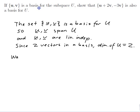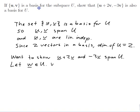I want to show that u plus 2v and minus 3v span U. And that means I want to show that everything in U is a combination of them. So let me pick a vector in U. Let w be in U. Want to show that w is a linear combination of u plus 2v and minus 3v.